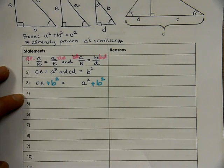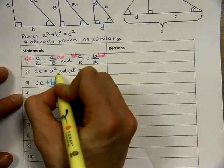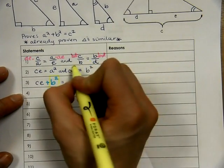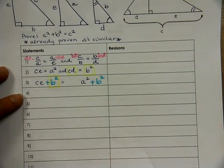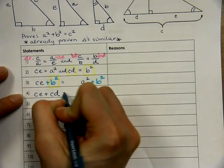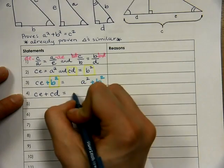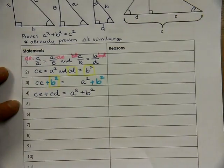So, what we can do is substitute in. We know that B squared is equal to CD. So, this guy right here, we are going to substitute in. And we will get that CE plus CD is equal to A squared plus B squared.